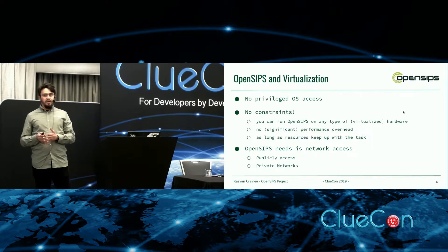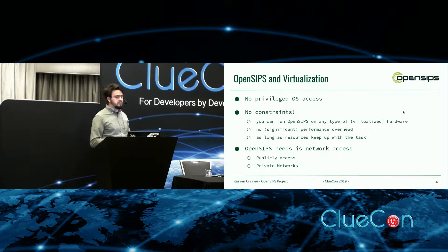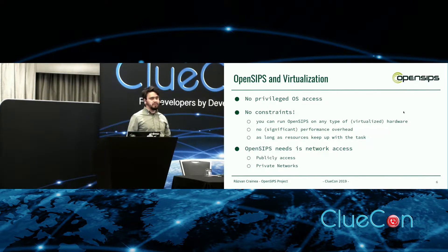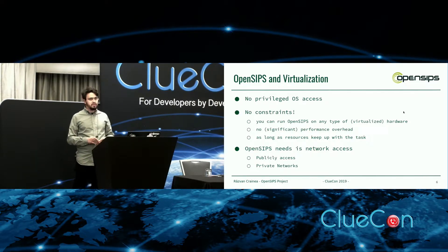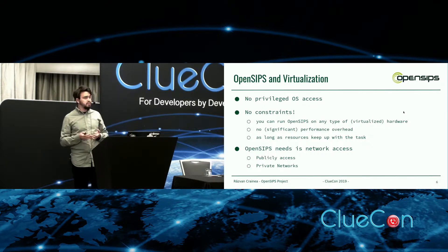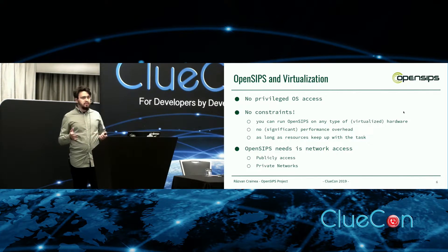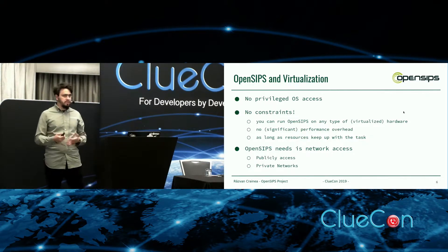Regarding virtualization, people were asking me how does OpenSips behave in a virtualized environment. The answer is: perfect. That's because OpenSips doesn't need any privileged access to the operating system internals, so all we have to do is deploy it. There are no constraints — you can run OpenSips in any virtualized or bare-metal hardware. There's no significant overhead, except for the virtualization itself.